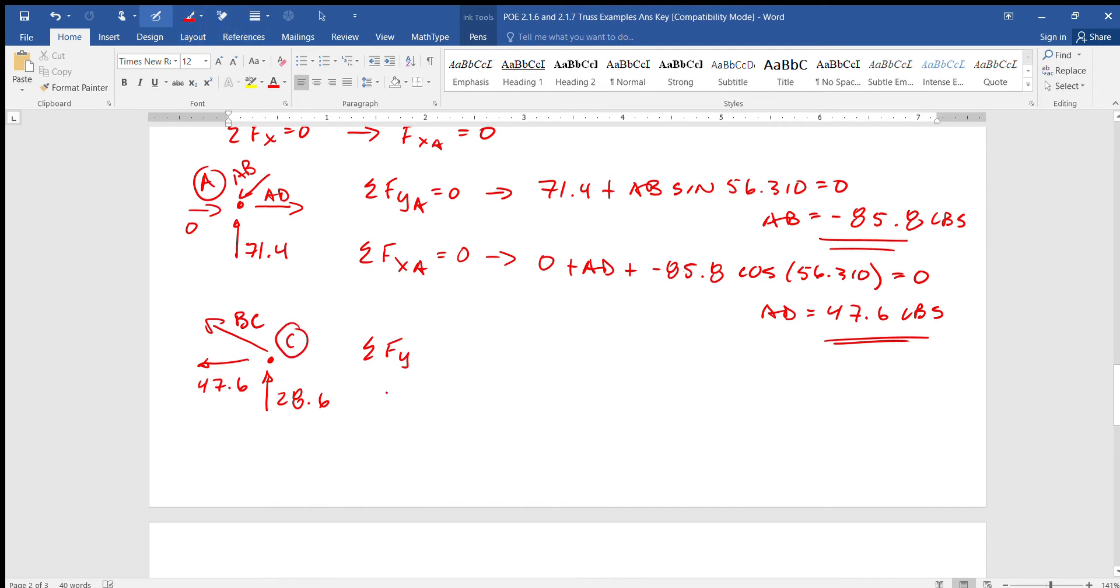47.6 and this is BC. Sum of all the y's about C equals zero, so 28.6 plus BC sine of 30.964, go up and get that angle off of the original sketch, equals zero. So BC equals negative 55.5.